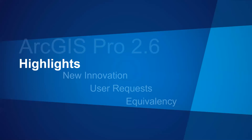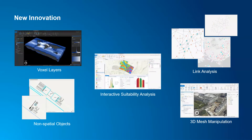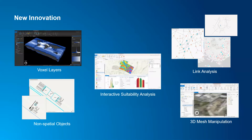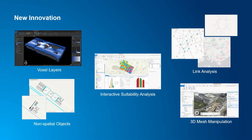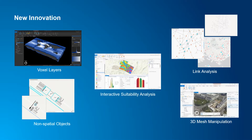I'm just going to hit on a few highlights — there's just way too much to cover. In terms of new innovation, I'll start with the voxel. A voxel is a volumetric pixel — that's the way I describe it — sort of a 3D volume version of rasters. I've got a little demo that probably explains it a bit better.